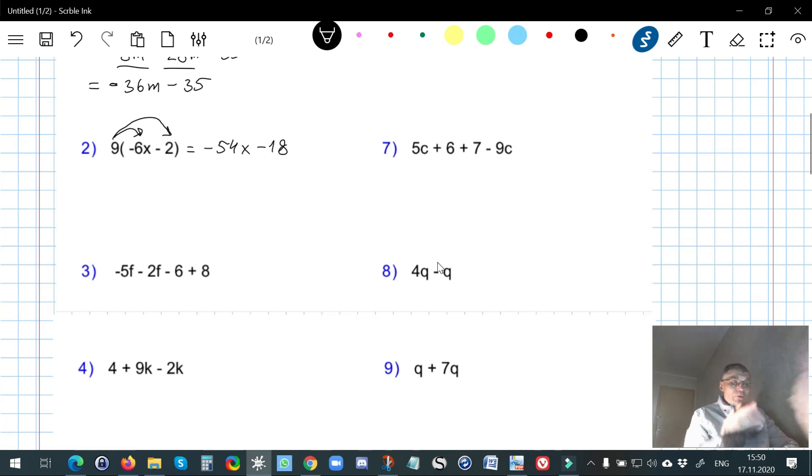Here there is no distribution at all, but we have to combine like terms. We have this and we have this. Negative 5 plus negative 2 gives me negative 7f, and negative 6 plus positive 8 gives me positive 2.